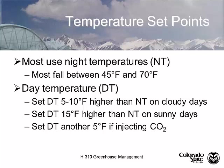Night temperatures, depending on the species, range anywhere from 45 to 70 degrees Fahrenheit. Cool season plants—crops like carnations—do well at low night temperatures: 45, 50, 55 degrees is pretty common. Whereas at 70 degrees you're looking at something more like an African violet.